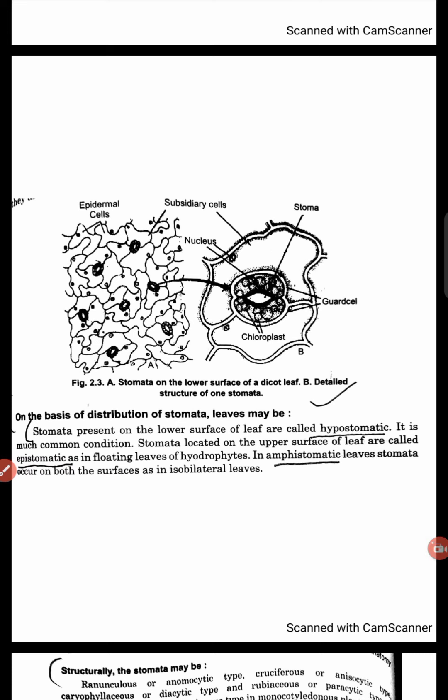On the basis of distribution, we can classify stomata. If the stomata are present on the lower surface of the leaf, we call these hypostomatic leaves. Hypo means below. This is a common condition we can see in hypostomatic leaves.